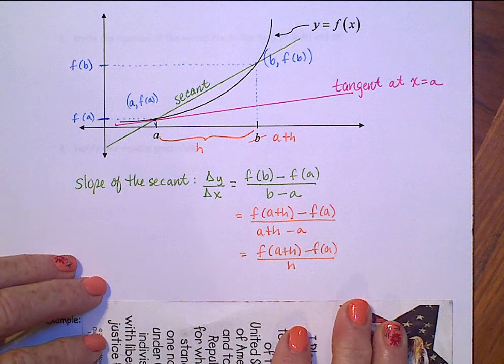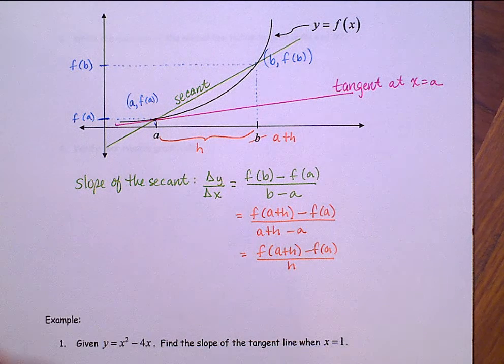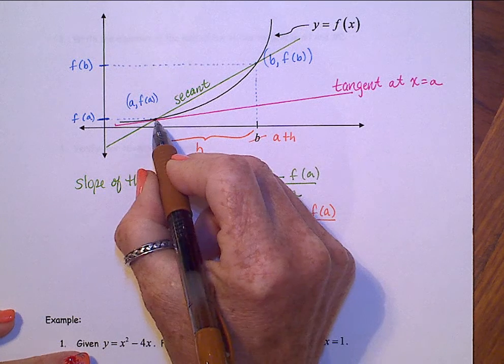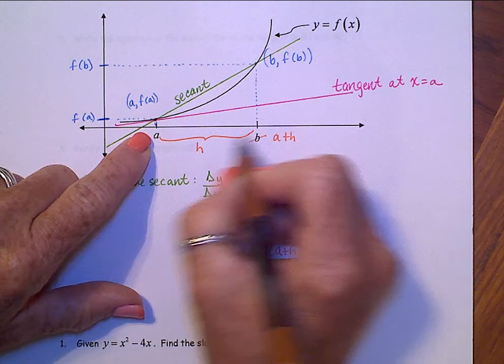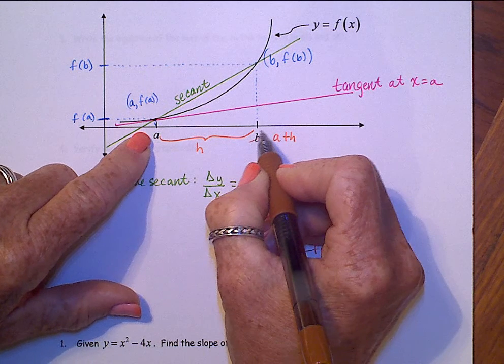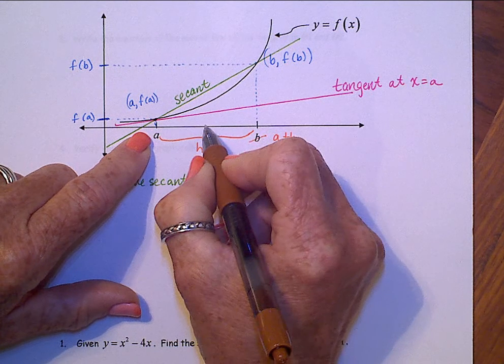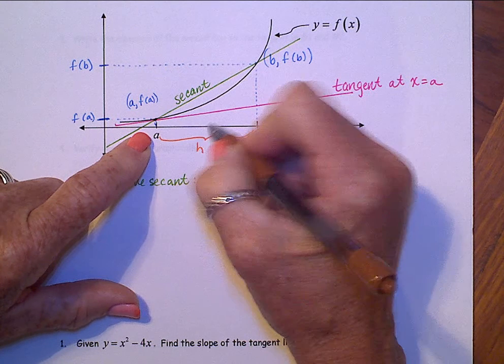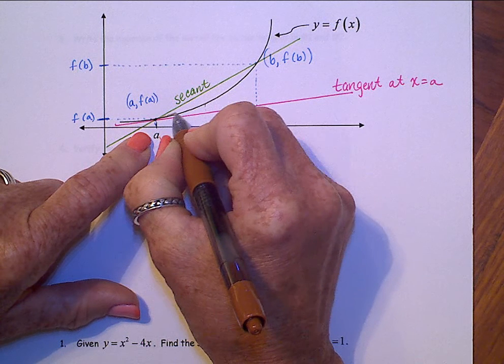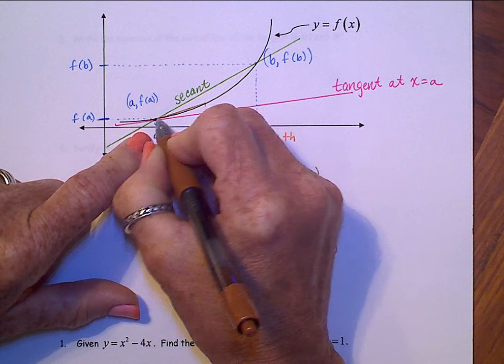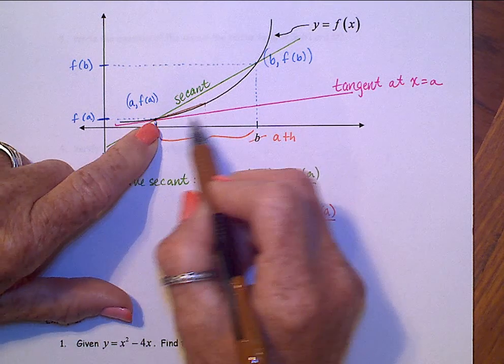Okay, don't draw this on your paper because it's going to get very messy. But watch up here, what happens if I were to make this h smaller? So instead of this b or this a plus h being way out here, what if my b or my a plus h was right here? Then, my secant line would be right there.